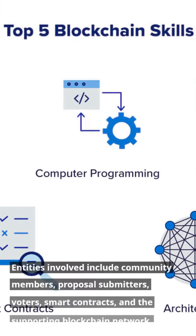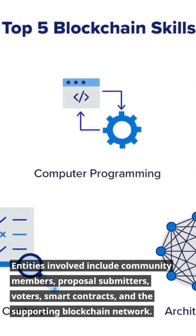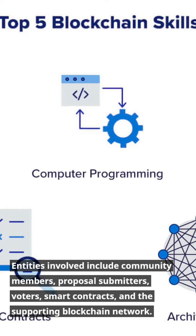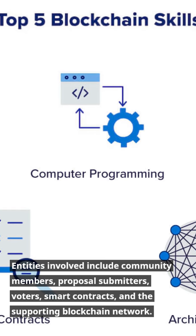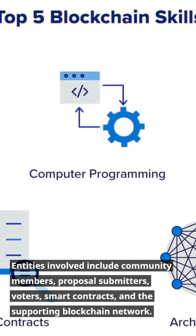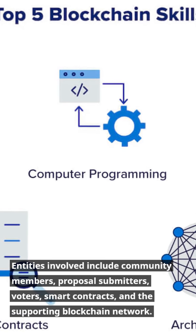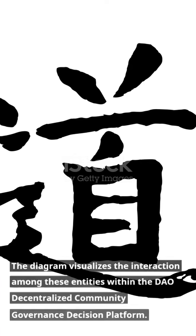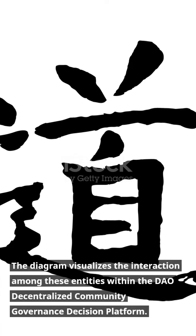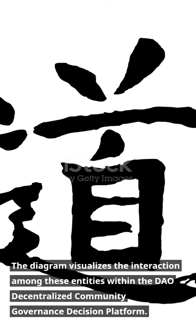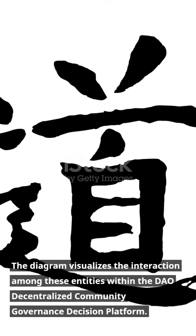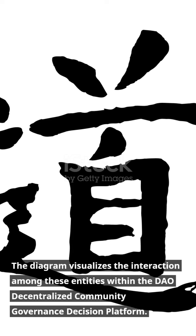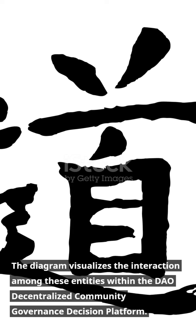Entities involved include community members, proposal submitters, voters, smart contracts, and the supporting blockchain network. The diagram visualizes the interaction among these entities within the DAO Decentralized Community Governance Decision Platform.